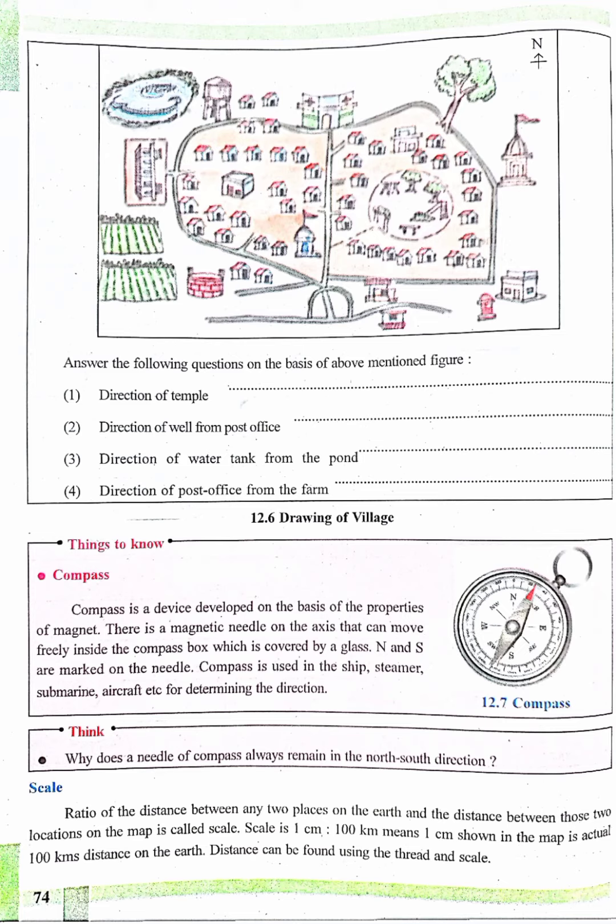That is why the needle of the compass always points north-south direction. Scale: Ratio of the distance between any two places on the earth and the distance between those two locations on the map is called scale. Scale of 1 cm equals 100 km.